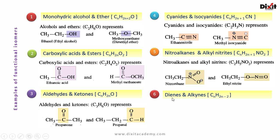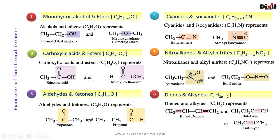Example 6: dienes and alkynes. They are represented by the same general formula CnH2n-2. In dienes the functional group is carbon-carbon double bond (C=C); in alkynes the functional group is carbon-carbon triple bond (C≡C). The molecular formula C4H6 represents buta-1,3-diene, but-1-yne, and but-2-yne — they are functional isomers of each other.